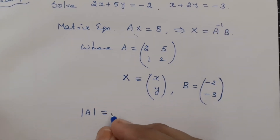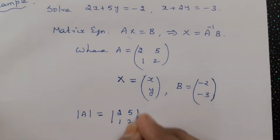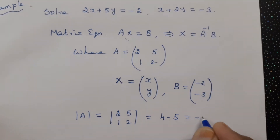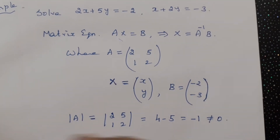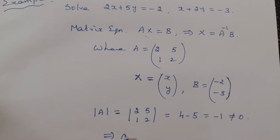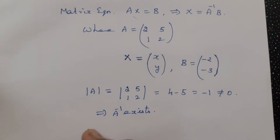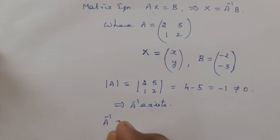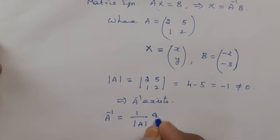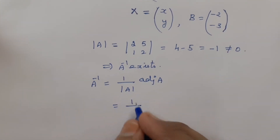The determinant value is 4 minus 5 equals minus 1, which is not equal to 0. Since the determinant of A is not equal to 0, A inverse exists. Now let us find A inverse. The definition is: A inverse equals 1 by determinant of A into adjoint of A, that is 1 by minus 1 times the adjoint of the given matrix A. Since it is a 2 cross 2 matrix we can directly write the adjoint.